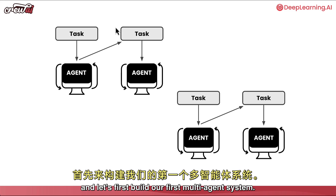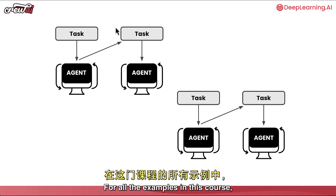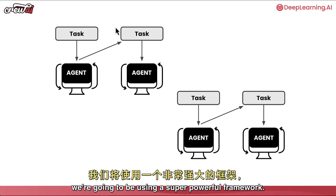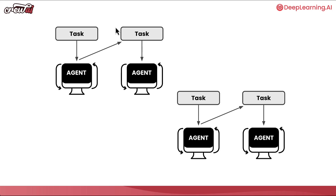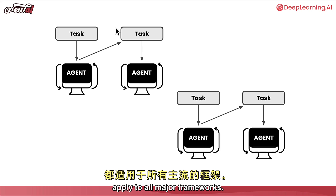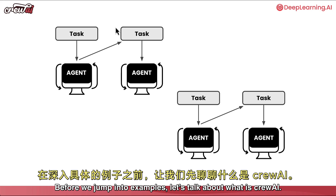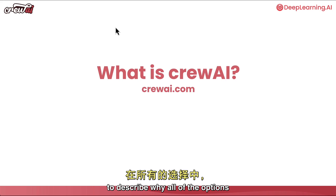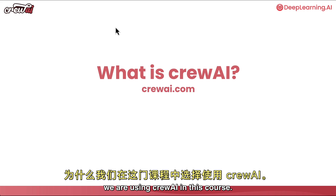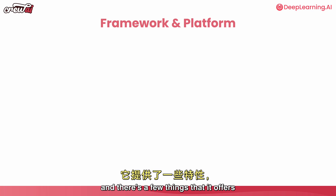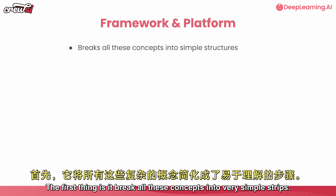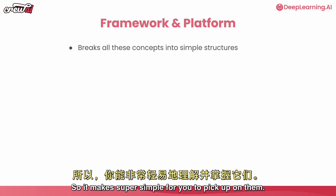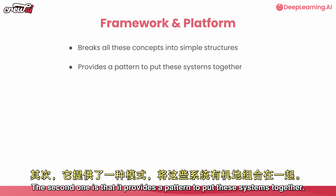For all the examples in this course, we're going to be using a super powerful framework called CrewAI. It's open source, simple, and designed for production use cases. It also offers a platform to bring your agents into production, but all the concepts we discuss apply to all major frameworks out there. CrewAI is a framework and platform with a few key things: it breaks all these concepts into very simple structures, making it super easy to pick up, and it provides a pattern to put these systems together so you don't need to think about how to string everything out.